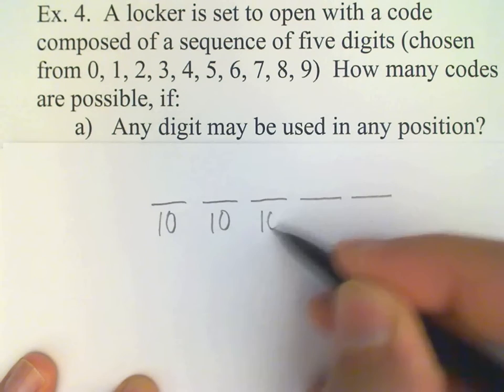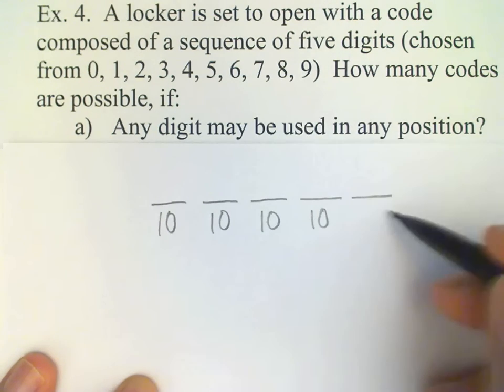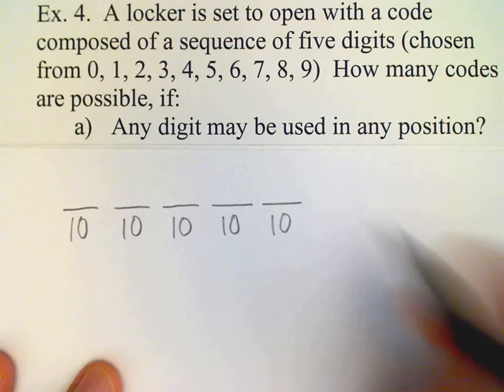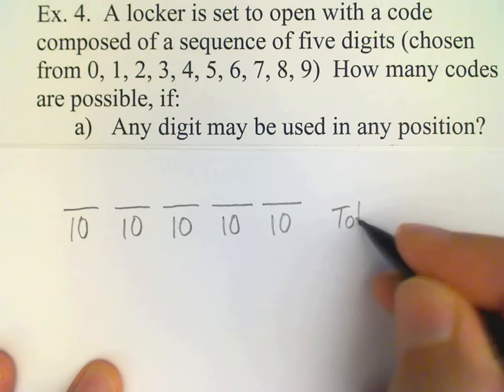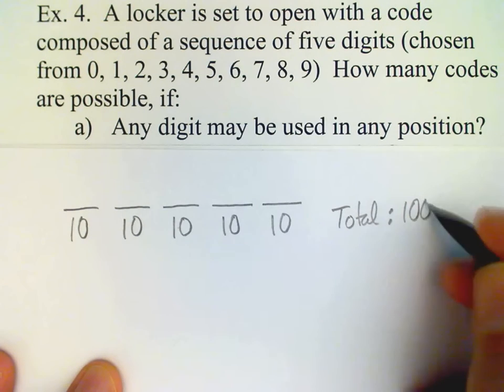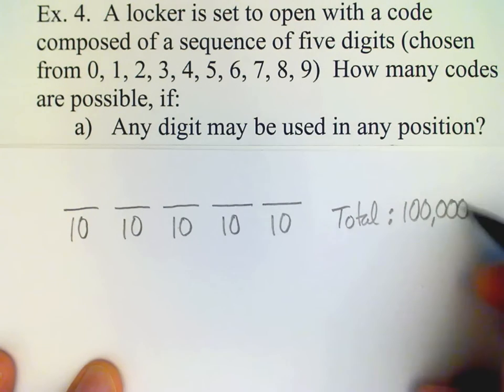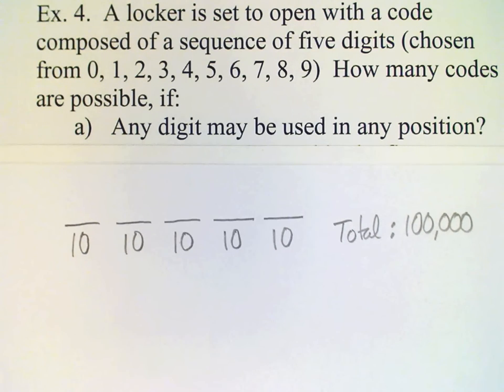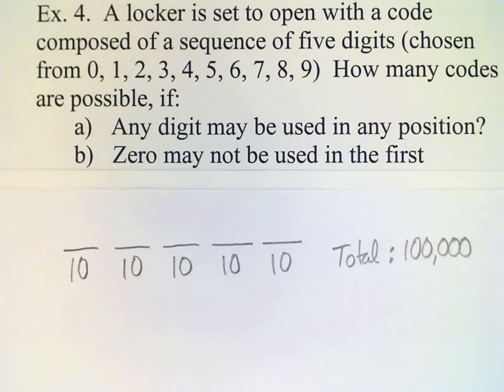For each slot there are ten possibilities. The fundamental counting principle tells us we need to multiply these possibilities, and so the total is a hundred thousand.